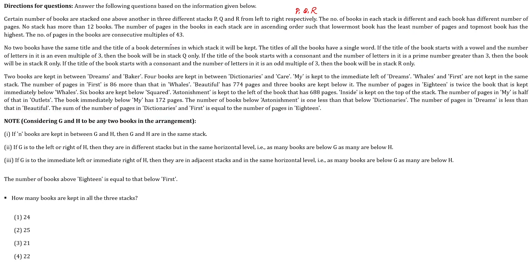After combining all the information, let us highlight some important points. The pages are consecutive multiples of 43. Beautiful has 774 pages and three books are kept below it. Beautiful starts with B, which is a consonant, and has nine letters total, which is an odd multiple of three. So Beautiful should be in stack R only, with three books below it, each decreasing by 43 pages from bottom to top.